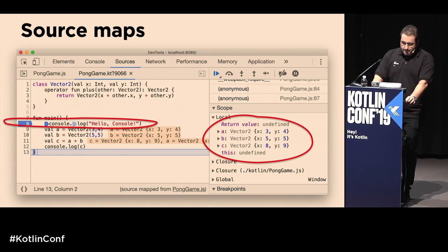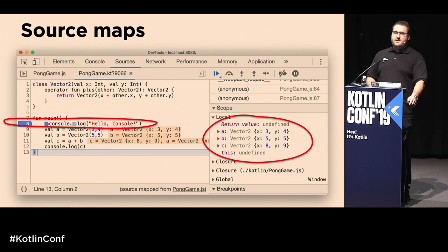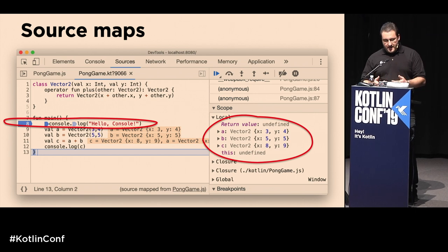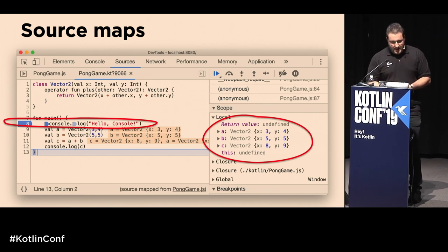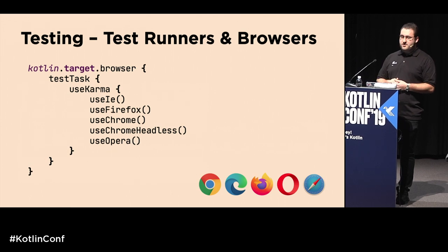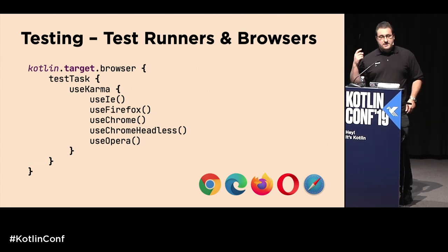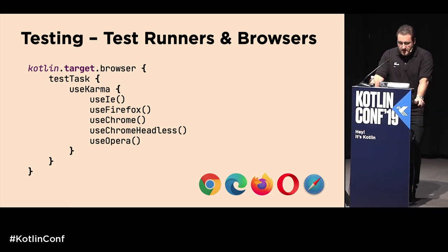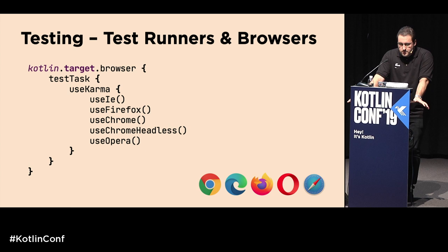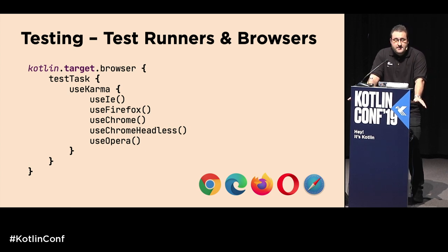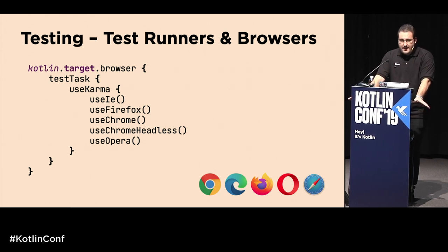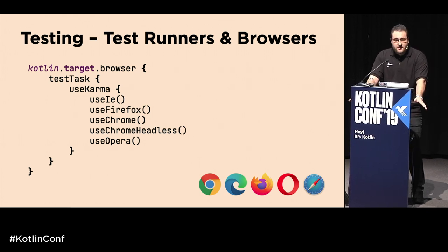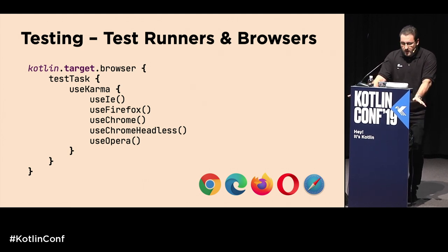Source maps also help with testing. We can use the Gradle DSL to set up platform-specific test runners like Karma or Mocha, with fine-grained control over how and where tests are executed. If you want to run them in Internet Explorer, Firefox, or headless Chrome, simply specify this in the build script inside the test task, and the Karma test runner works its magic.